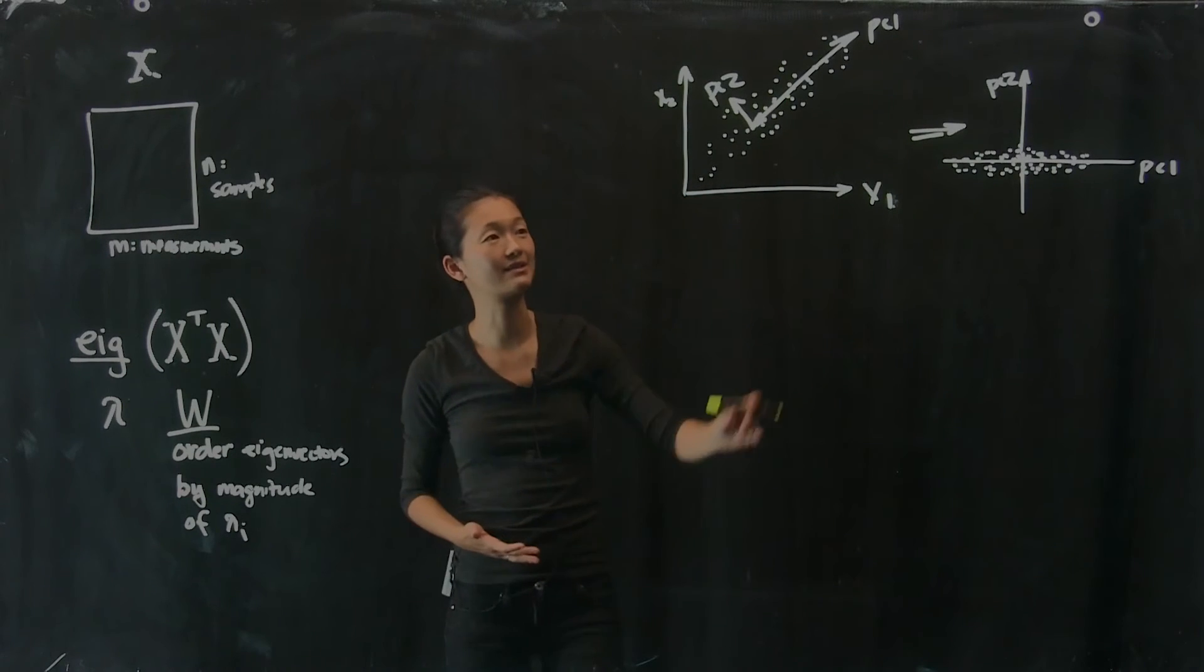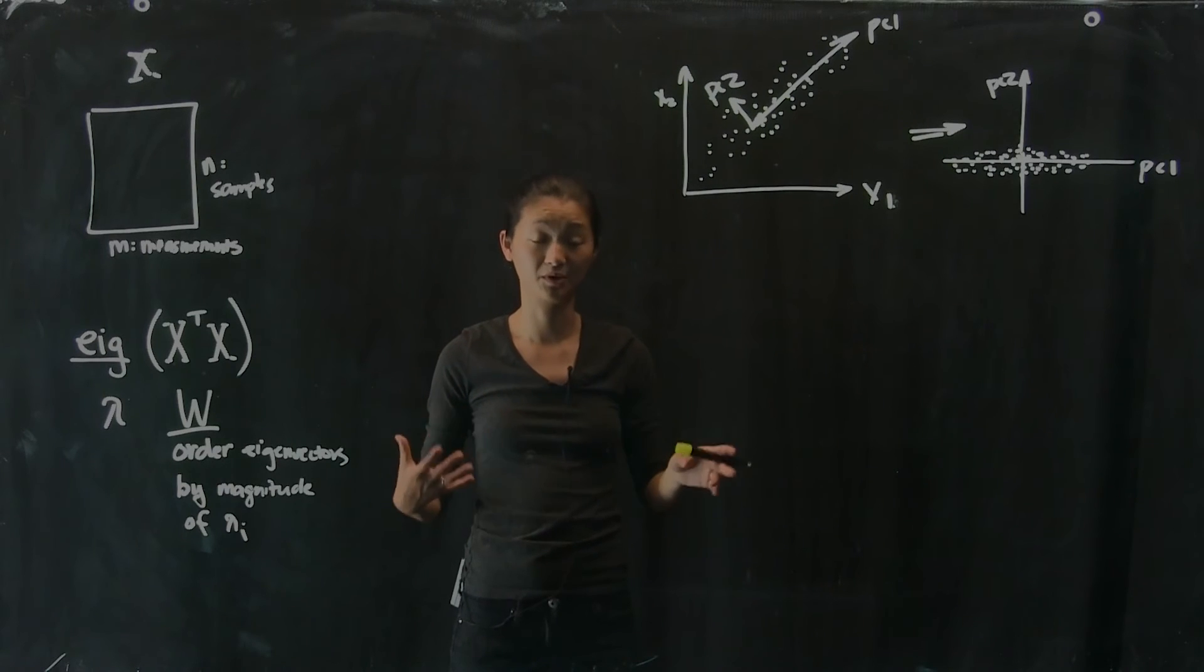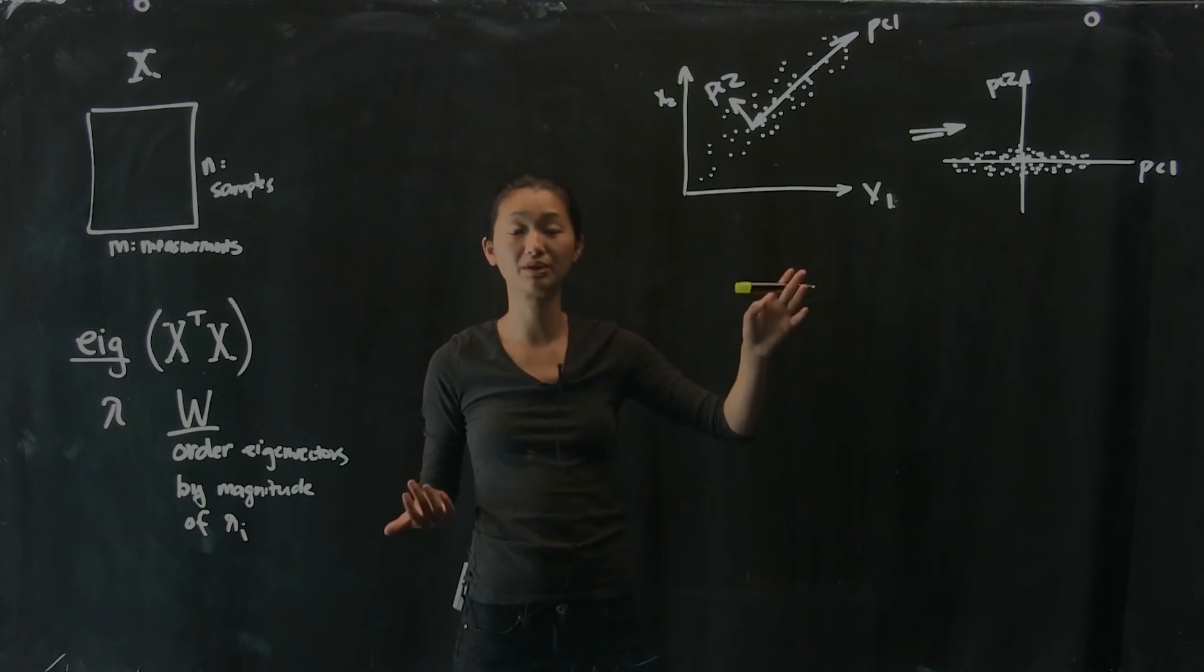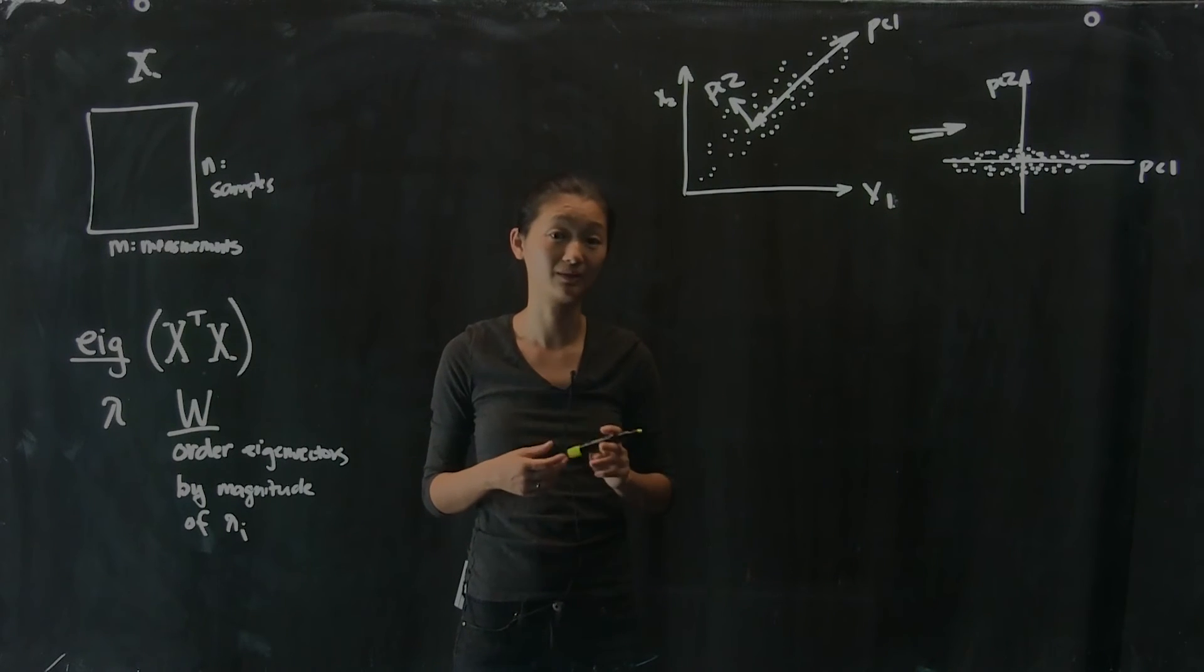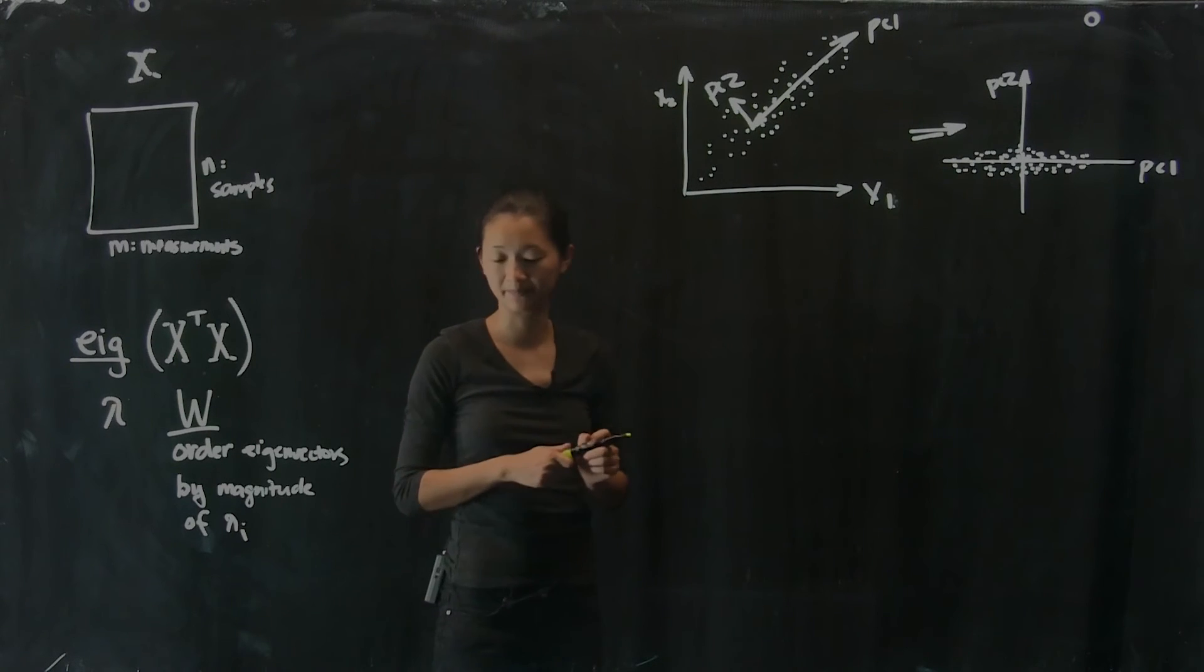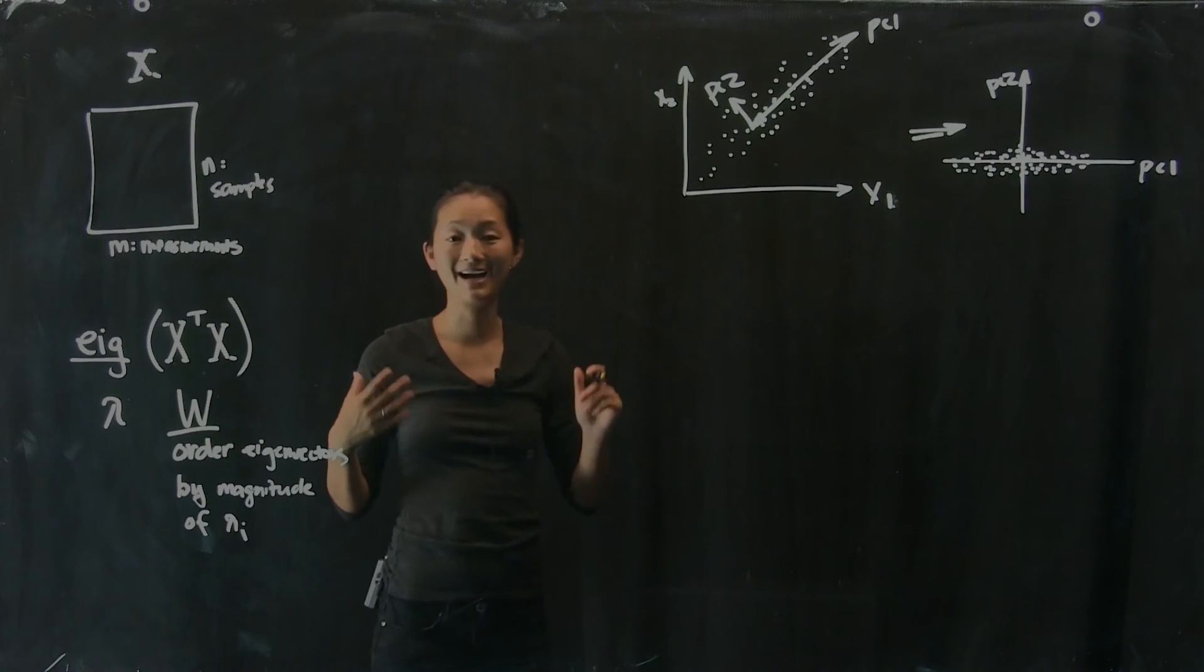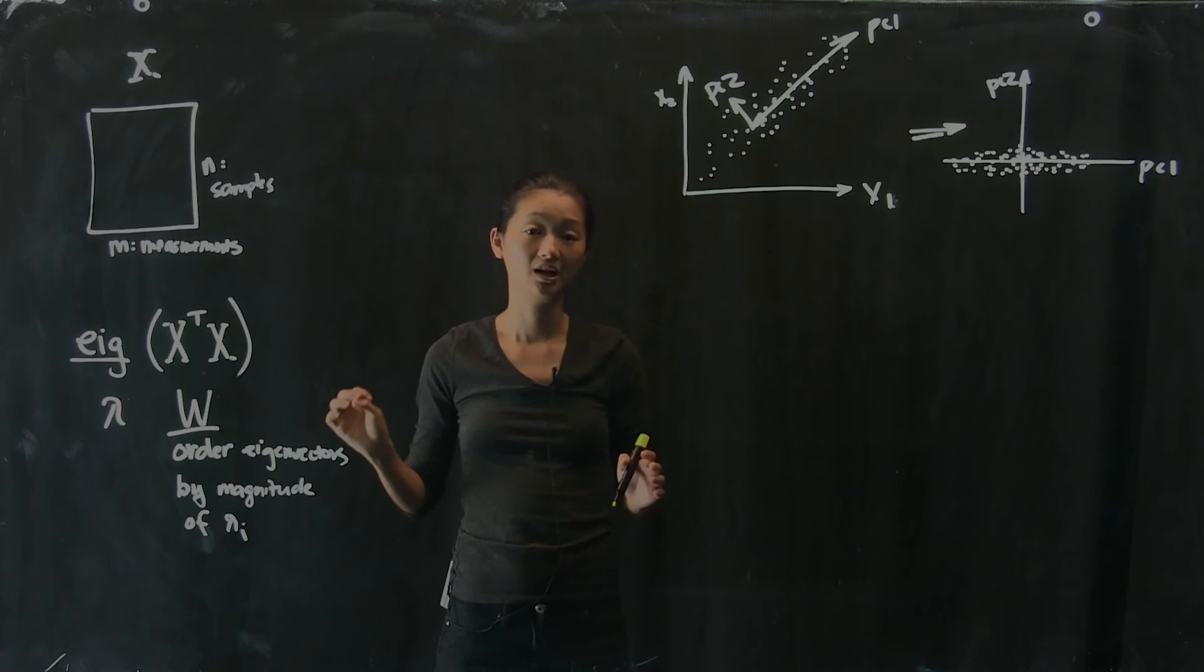And so you should keep in mind this kind of geometric interpretation of principal components analysis. It's a little hard to visualize this in higher dimensions. So we can probably do it with a cloud of dots in 3 dimensions, but in much higher dimensions than that, it gets really difficult to visualize. So there's a couple of special features of PCA that's important to note. PCA, by definition, will give you these directions in order of percentage of variance explained.